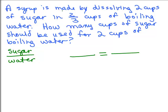The original recipe uses 2 cups of sugar for 2 thirds cup boiling water. So in the numerator is the sugar, and the denominator is the water, 2 thirds. How many cups of sugar should be used for 2 cups of boiling water? So the second part, how much sugar, I don't know, let's call that x, and in the denominator the water is 2.